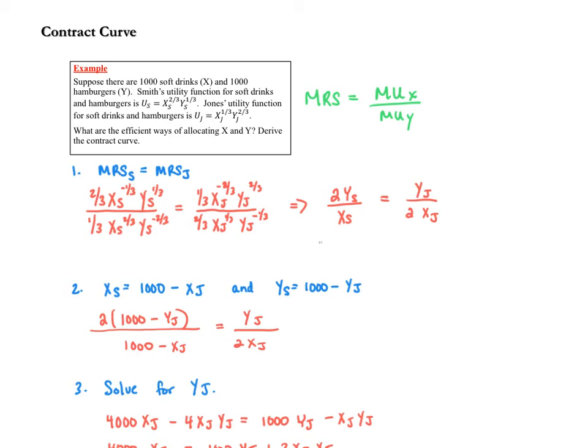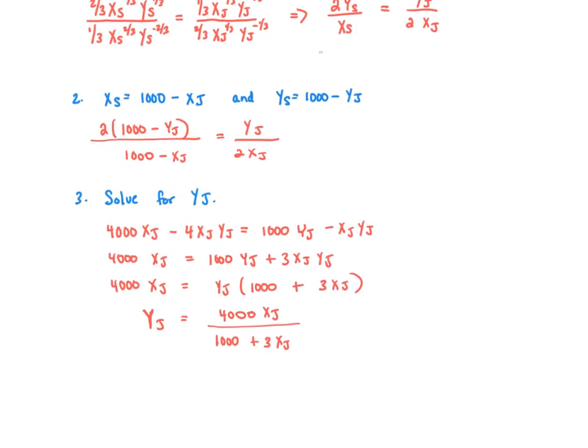Finally, I'm going to do some algebra to mathematically solve for Y Jones. First, cross multiply to get this line. Then, add 4X Jones Y Jones to both sides. Then, factor out Y Jones, since it's in both terms on the right-hand side.